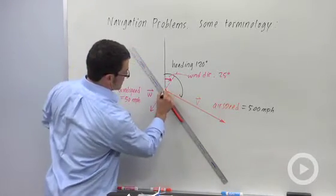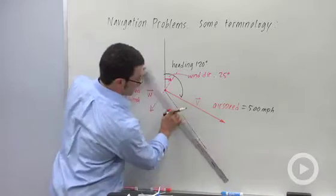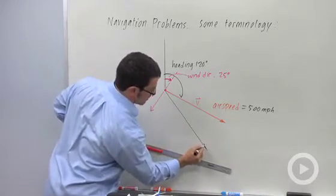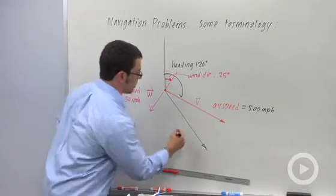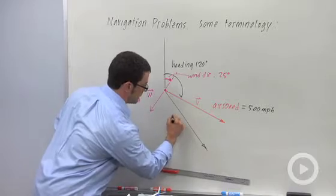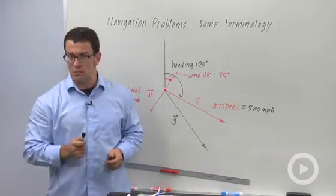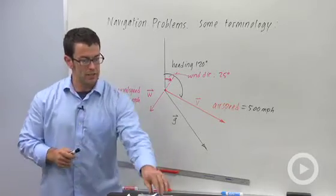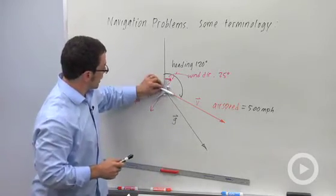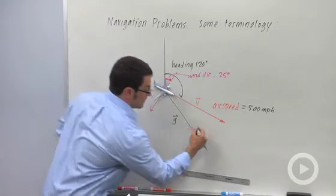So let's say that this is the sum of the two vectors, and we'll call it g. The magnitude of g is the ground speed. This is how fast the airplane is going with respect to the ground - the ground speed.